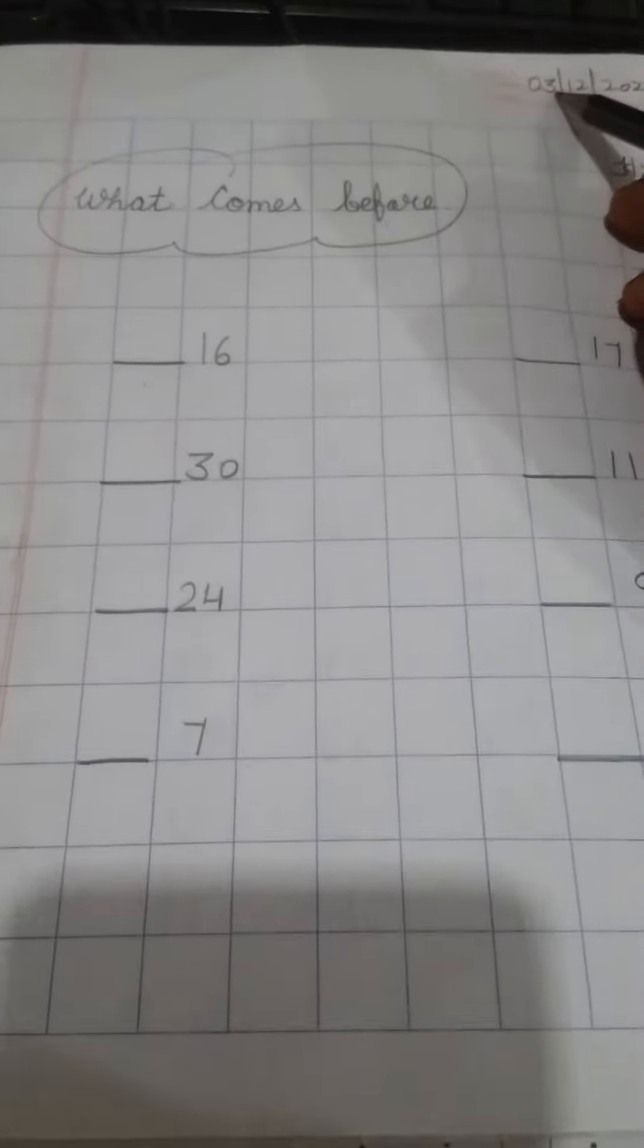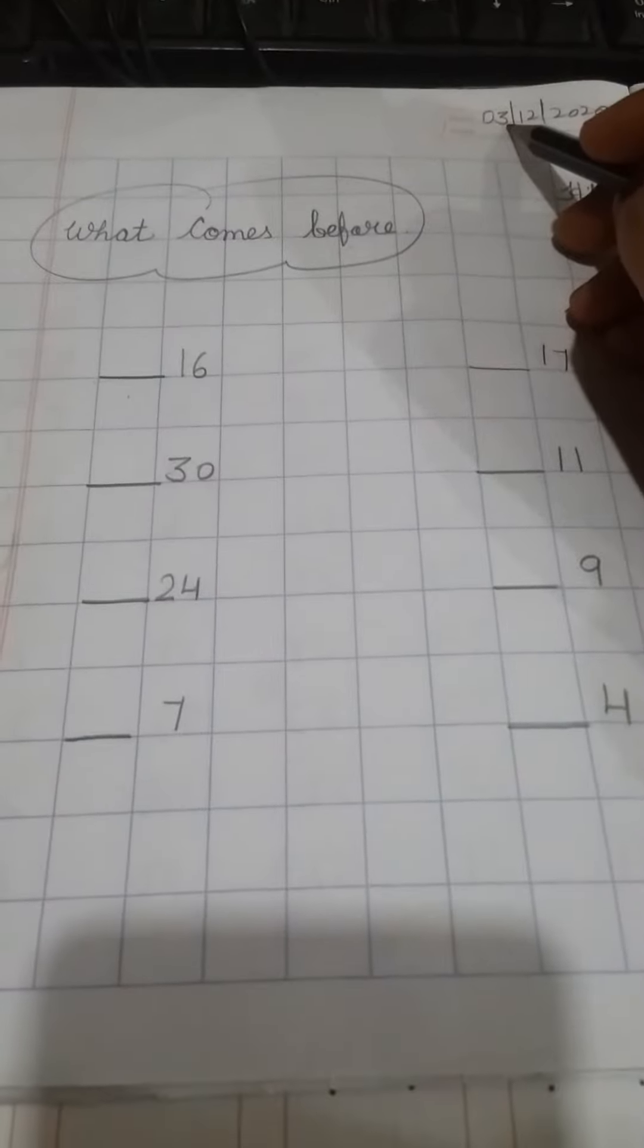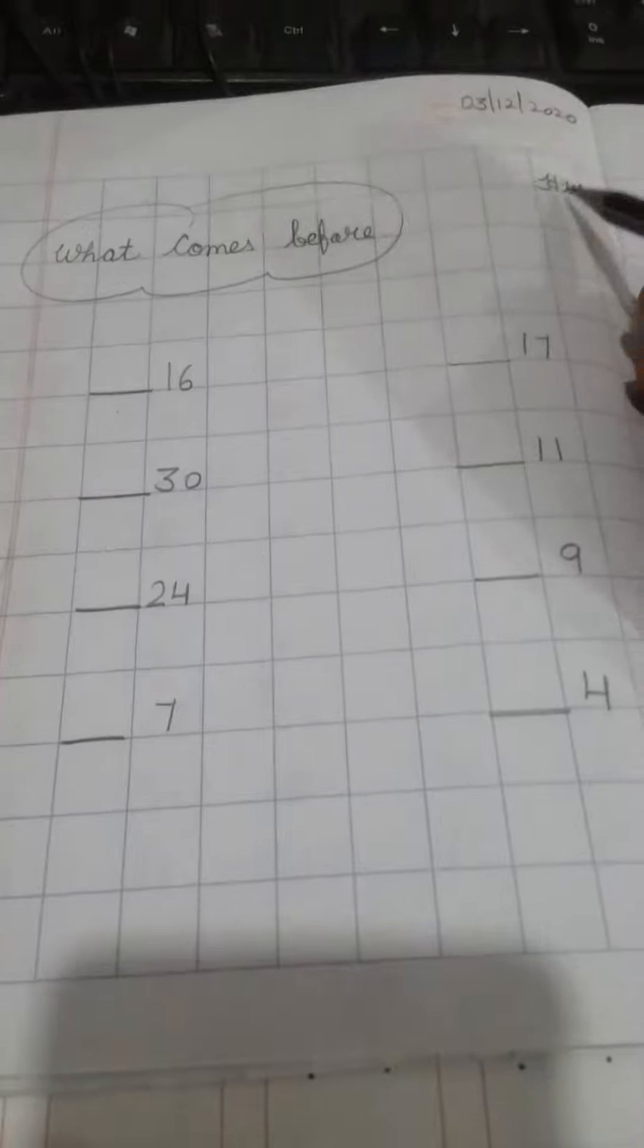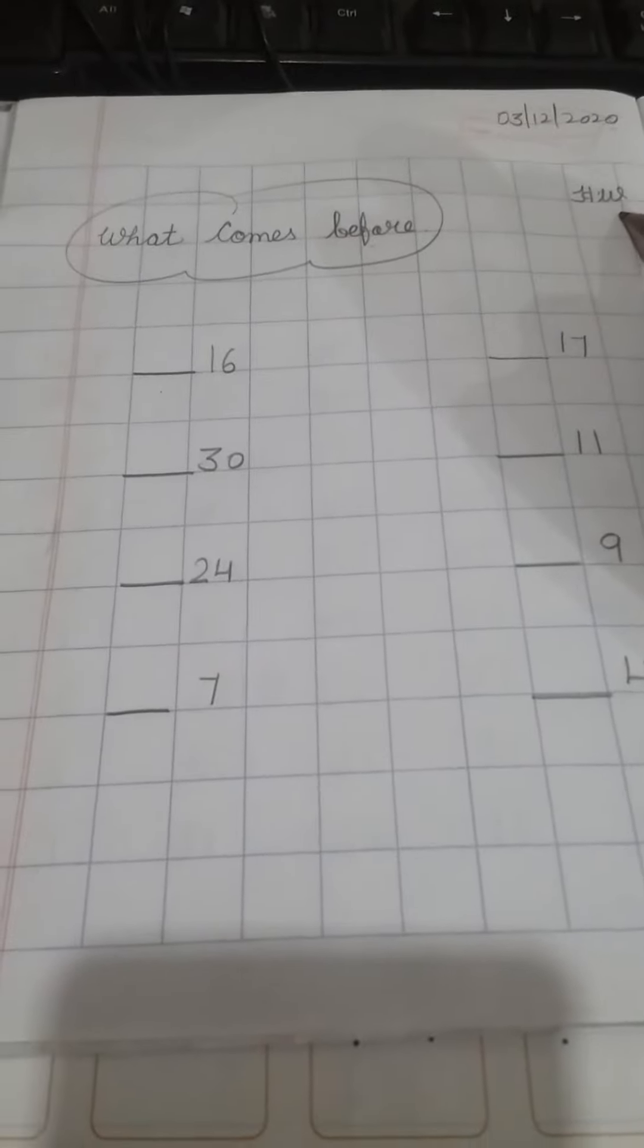Before starting our work, we will write here day. What is today's date? Today is 3rd December 2020. We will write here HW homework.